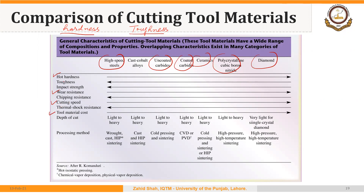On the contrary, as we move from left to right, the toughness, impact strength, chipping resistance, and thermal shock resistance are all reducing. In other words, the highest toughness or impact strength or chipping resistance is achieved using high-speed steel cutting tools, and it gradually reduces as we move toward diamond.